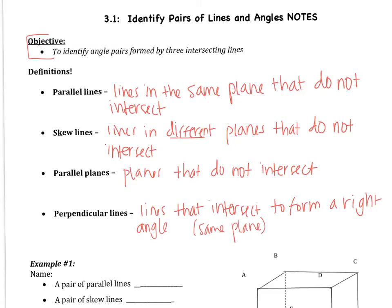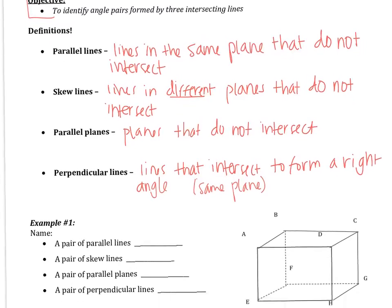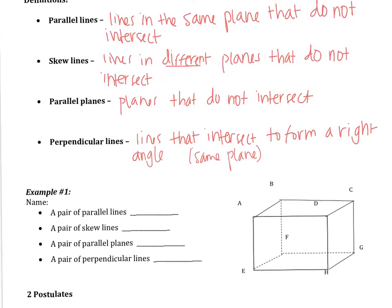Now, to synthesize all these definitions, I want to show some examples. Move down and look at example one. It says name a pair of all of those definitions, so let's start with parallel lines. Parallel lines are lines that do not intersect in the same plane. Looking at this top plane, there are two pairs of lines that do not intersect. The first one would be AB, which is parallel to CD — if I were to continue those, they are not going to intersect.